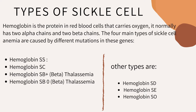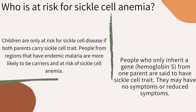I didn't get to know my actual type until I got to Canada, and that makes a lot of difference. Children are only at risk for sickle cell disease if both parents carry sickle cell trait. People from regions that have endemic malaria are more likely to be carriers and at risk of sickle cell anemia. People who only inherit the mutated hemoglobin S gene from one parent are said to have sickle cell trait — they may have fewer or reduced symptoms. Sickle cell is not an airborne disease and cannot be transferred through any other means. It's a genetic disorder — you can only get the disease when you have two parents with a mutated hemoglobin S chain.